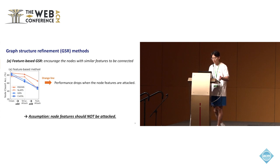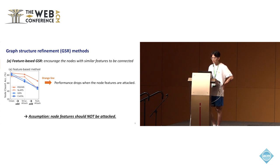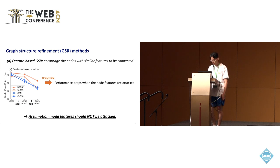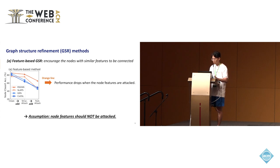To be more specific, the feature-based GSR method encourages nodes with similar features to be connected to refine the given graph structure. However, in this work, we discovered that the performance of the feature-based method drops significantly when the node features are attacked. This means they are built on the assumption that the node features should not be attacked or noisy.